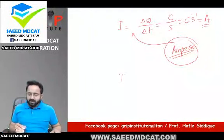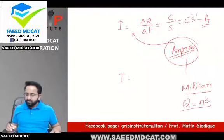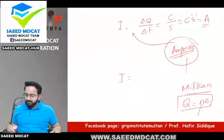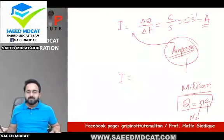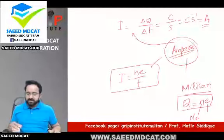Current ka ek aur formula bhi yaad rakhiye ga. Ye Millikan ne formula diya tha charge ka: Q is equal to n times e. N is number of electrons, and e is charge on electron or charge on proton. So you can write this formula: I = ne over t. This formula is current.